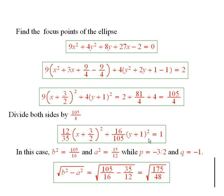Now that says that b squared is equal to 105 over 16, a squared is 35 over 12, p equals minus 3 halves, and q is minus 1. So when we apply the procedure...